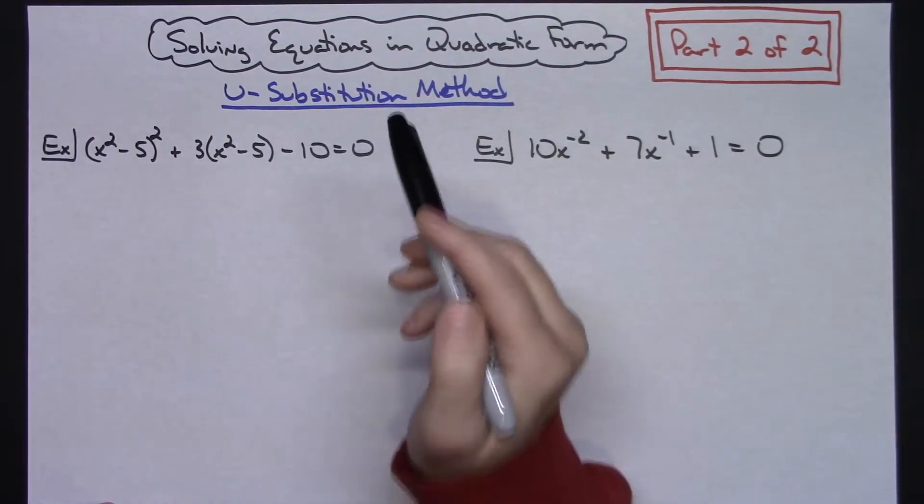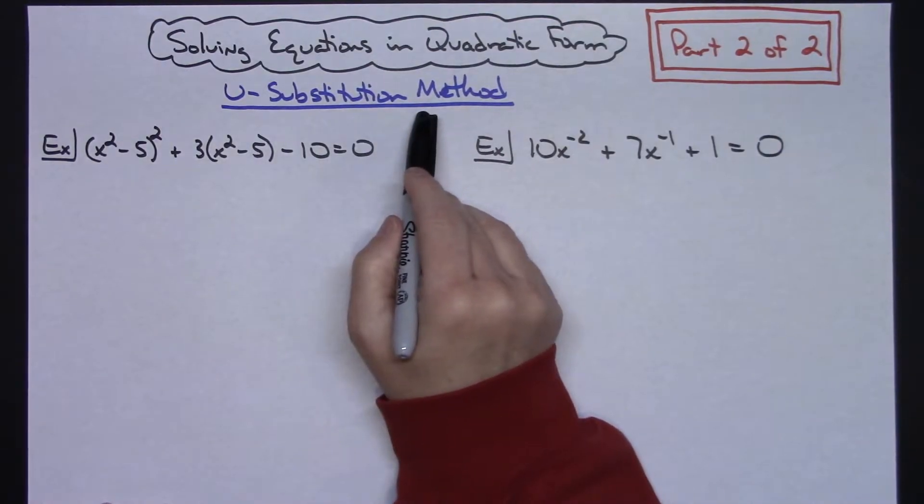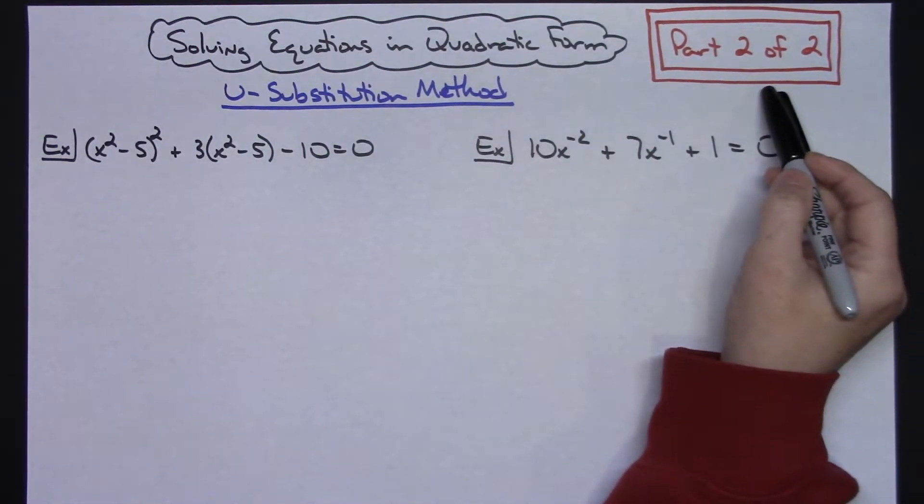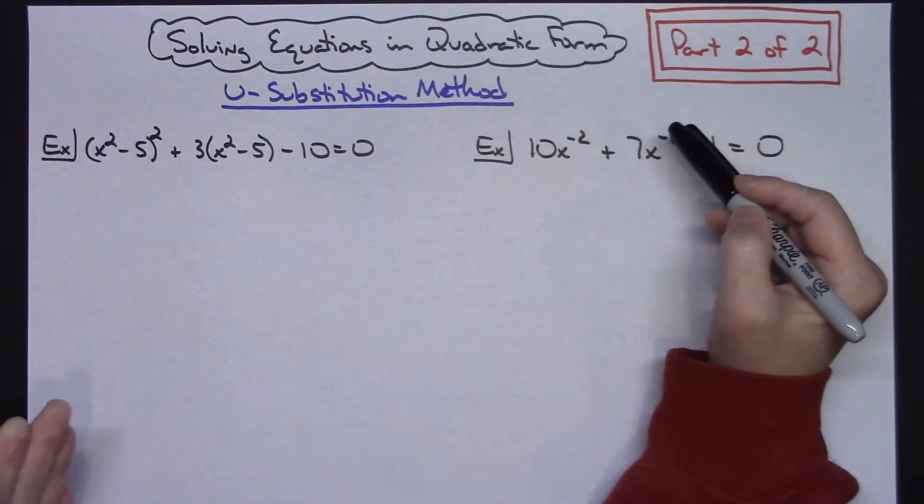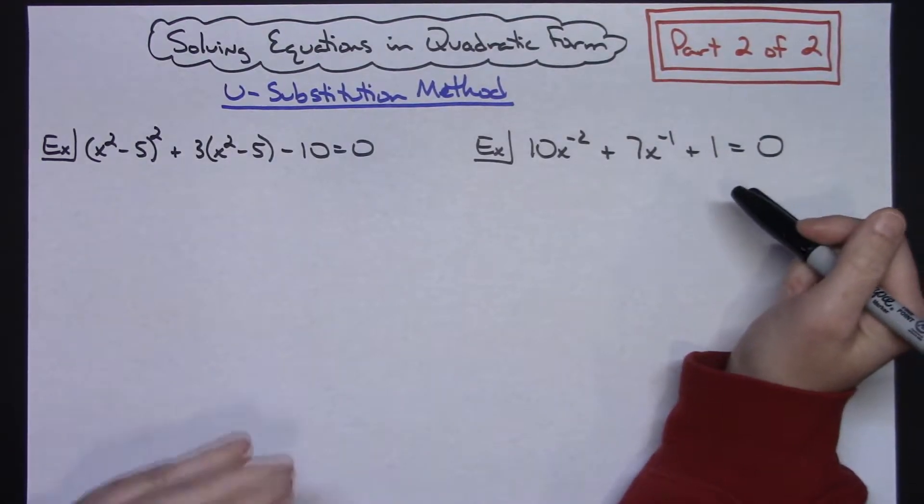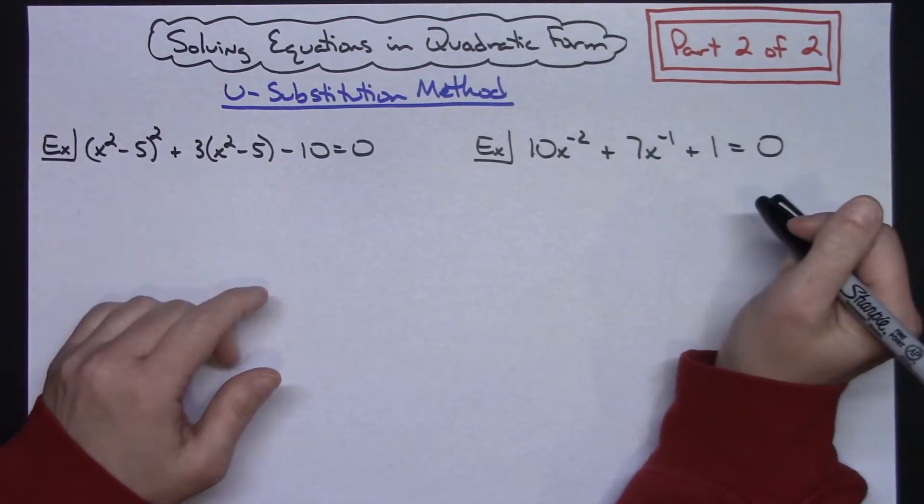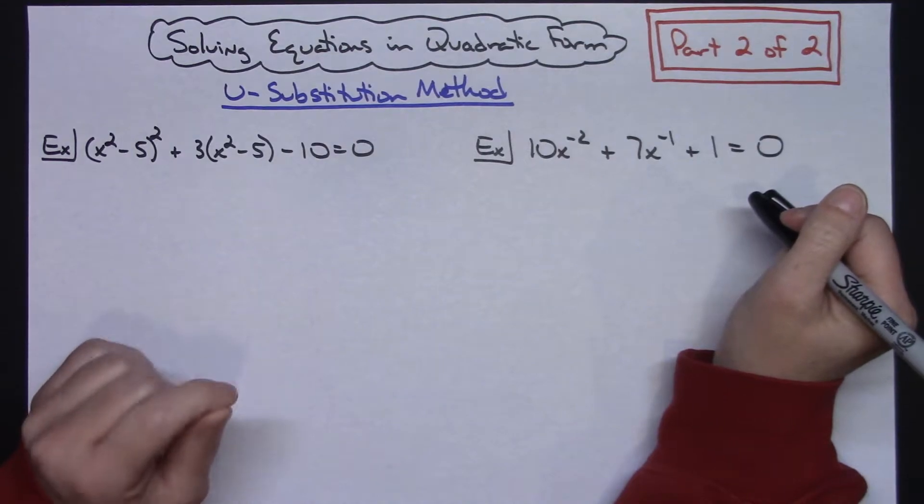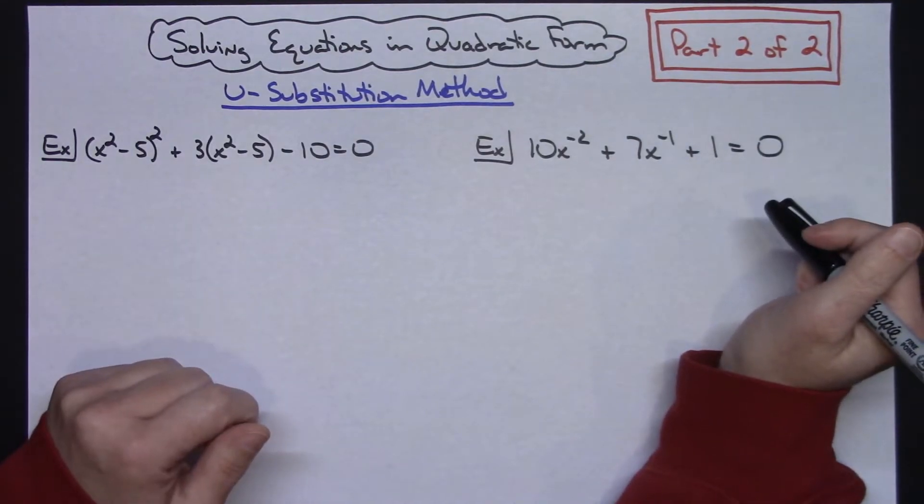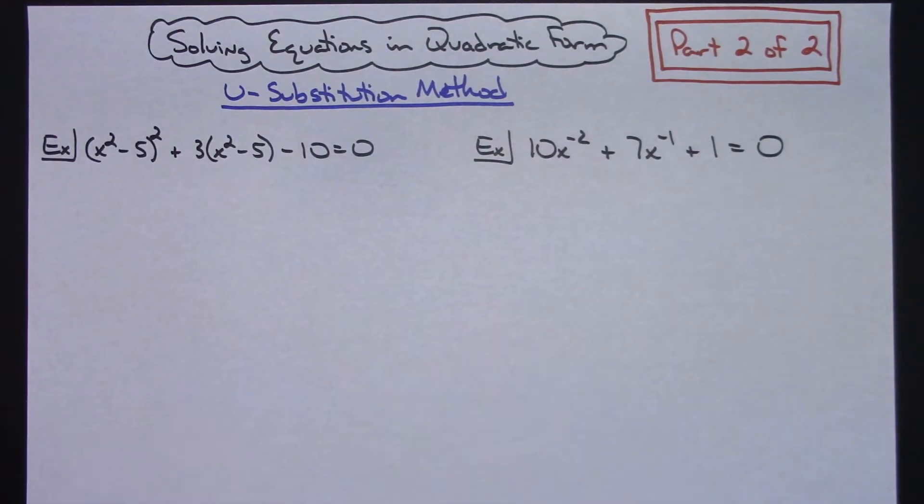In this video I'm going to be solving equations in quadratic form using a u-substitution method. This is part two of two. In the first video I introduced the idea with a couple easy examples, and these two examples are just going to be some unusual things that you might run into but would still fit into this category of u-substitution method because the equation is in a quadratic form.